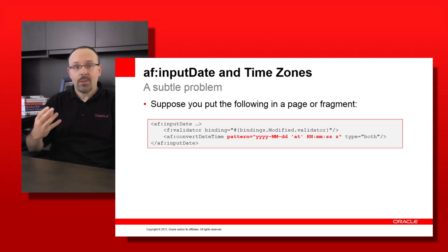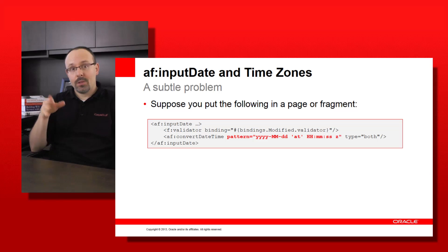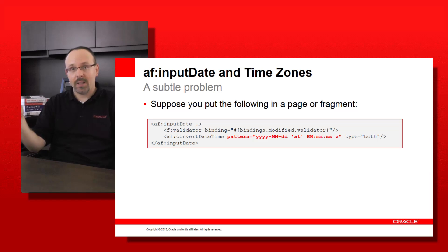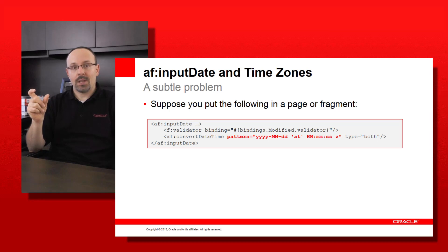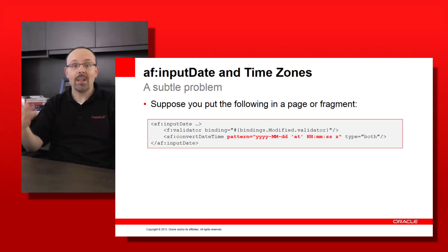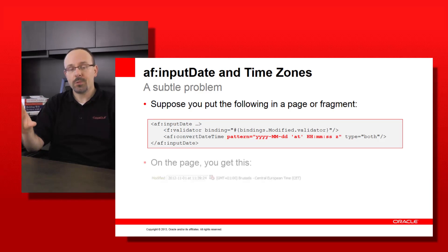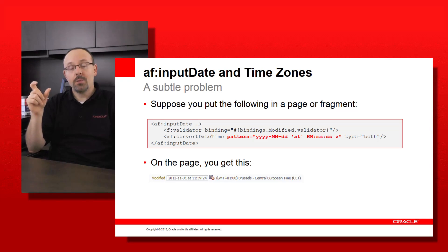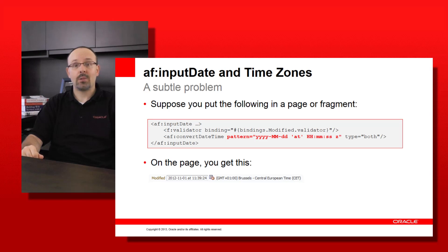There are subtle time zone-related issues when you try to build user interfaces with ADF. In the next few slides, I will illustrate the most common one. Suppose you have an input date somewhere in a page or page fragment. You will have a validator and a convertDateTime tag in order to specify the format you want the datetime to be recorded in. You have this nice pattern where you put a Z at the end to specify that you want to read and write the time zone for the datetime value. When you run the page, everything displays perfectly — you will get a date-time picker and on the screen the value for the time zone selected by the end user.